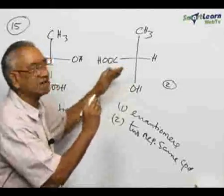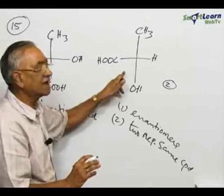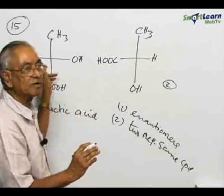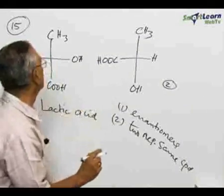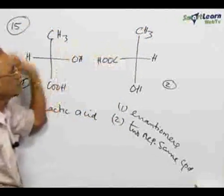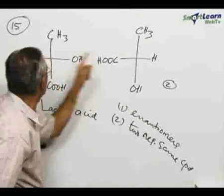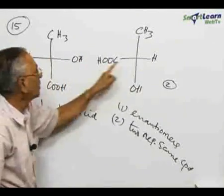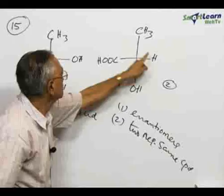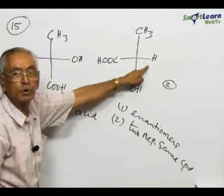Try to make interchanges in the second compound so that it becomes exactly identical with the first. This CH3 exactly matches with the other CH3, therefore there is no need of making a change. This hydrogen in the second structure is on the right whereas this hydrogen is on the left. Therefore, bring the hydrogen to the left so that the COOH goes to the right.